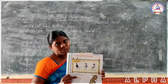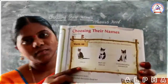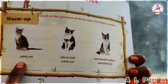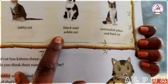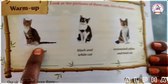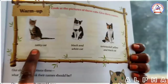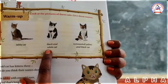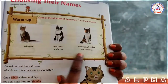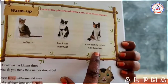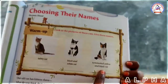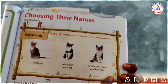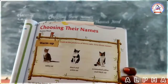Look at this picture. In this picture, there are three cats. One is a tabby cat, one is a black and white cat, and one is a yellow and black cat. The poet tries to select names for these cats.